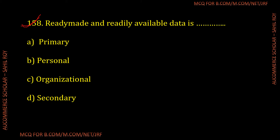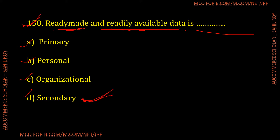Question number 158: Ready-made and readily available data is called what? The options are: primary data, personal data, organizational data, and secondary data. The correct answer is secondary data — Option D. Data that others have collected and published is ready-made and readily available, making it a secondary source.